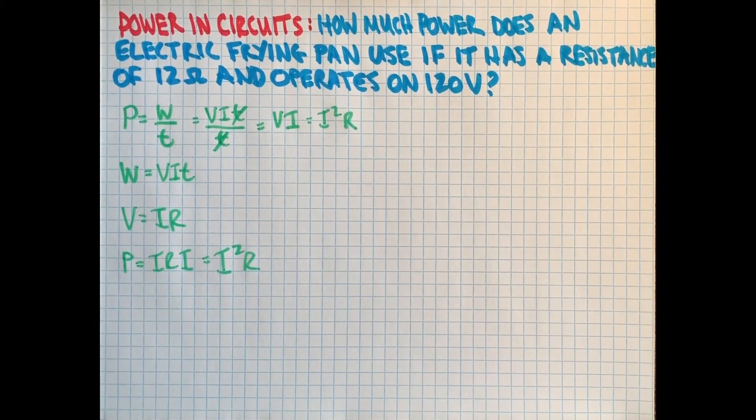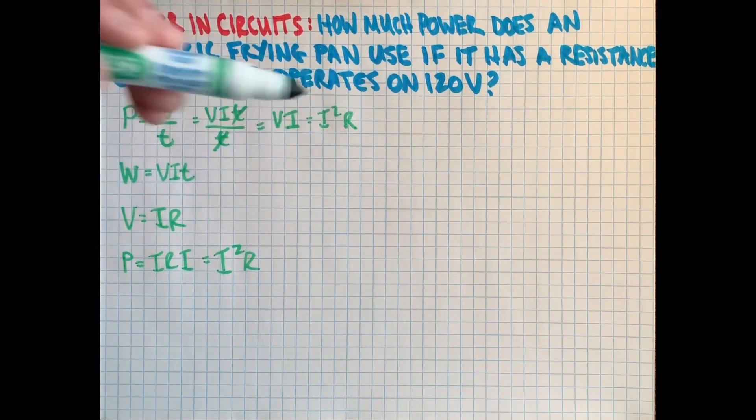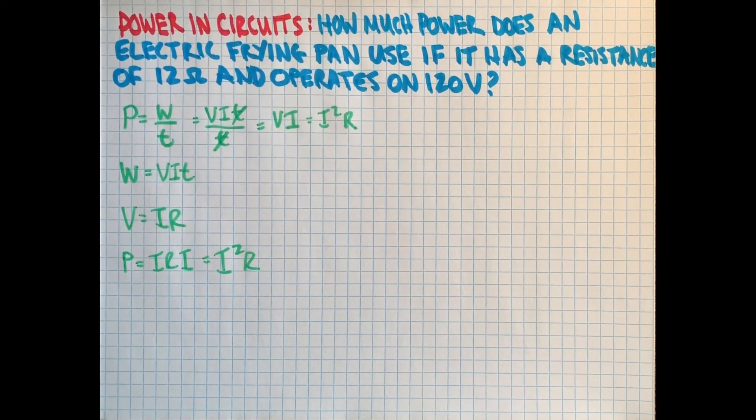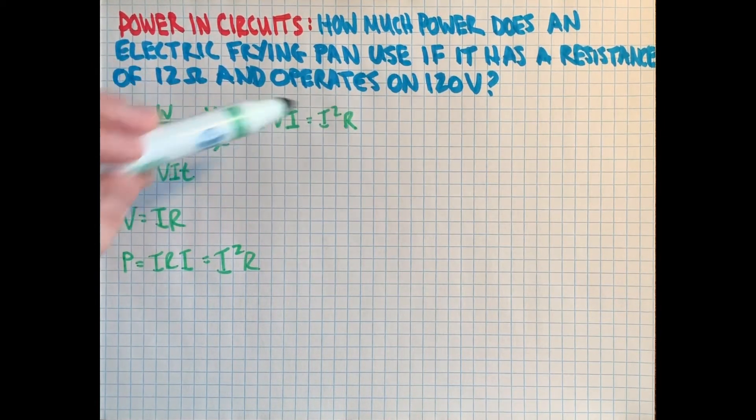Again, this is not what we need though, because we know, okay great, there's some resistance, but we've lost our voltage, which is current, which we don't know anything about here. And so if I had asked this question where it was some current and some resistance, we could use that.